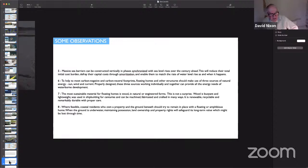Number eight: where feasible coastal residents who own a property and the ground beneath should try to remain in place with a floating or amphibious home. When the ground is underwater, maintaining possession, land ownership of property rights will safeguard its long-term value which might be lost through time. In other words, if you own your property freehold and the ground on which it sits, don't abandon it, but somehow maintain ownership of it with a floating structure above if you can, because when the time comes that you can either build a permanent structure or the water level has receded, you're still in your original site.